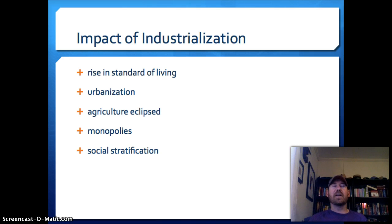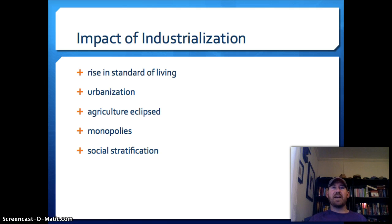To wrap up, the impact of industrialization on America: there was a general rise in the standard of living, though that didn't apply to everyone — immigrants working in factories were often exploited. Urbanization increased as people moved to cities to work in factories. America also became more of a manufacturing economy at the expense of agriculture. The monopolistic nature of big business prompted government regulations. And finally, social stratification — the gap between rich and poor — became even wider as a result of industrialization.